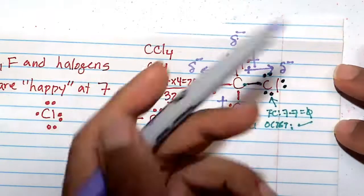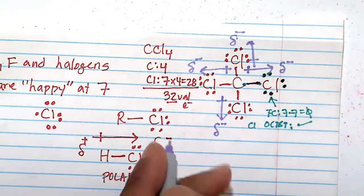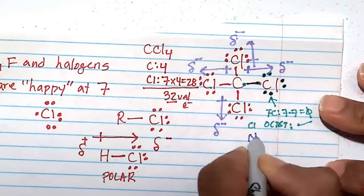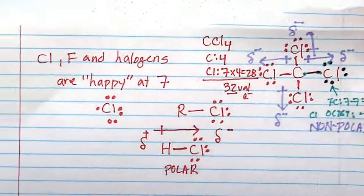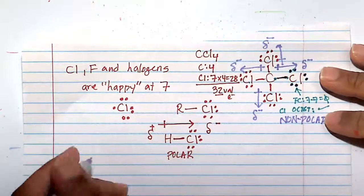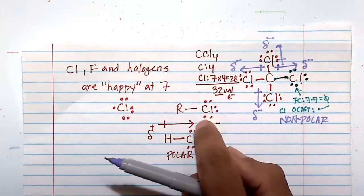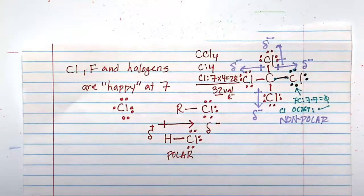And even though we have a bunch of electronegative halogens, they all cancel each other out, and you have a non-polar molecule. So electronegative elements are with the halogens. The halogens love seven. They love seven. They're going to have three lone pairs. You can substitute a bromine. You can substitute an iodine. You can substitute a fluorine here. It's the same situation.